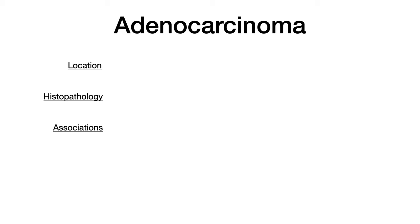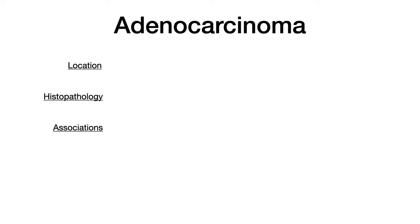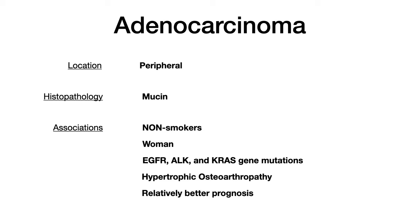Now let's talk about adenocarcinoma of the lung. Adenocarcinoma is located peripherally. The histopathology features mucin-producing cells. The prefix adeno means gland, so adenocarcinoma means cancer arising from glandular tissue — and in glandular tissue, it should be no surprise that you'll see mucin-producing cells that stain positive for mucin. The associations are what's really high-yield for adenocarcinoma, and this is much more of an epidemiology question than anything else.